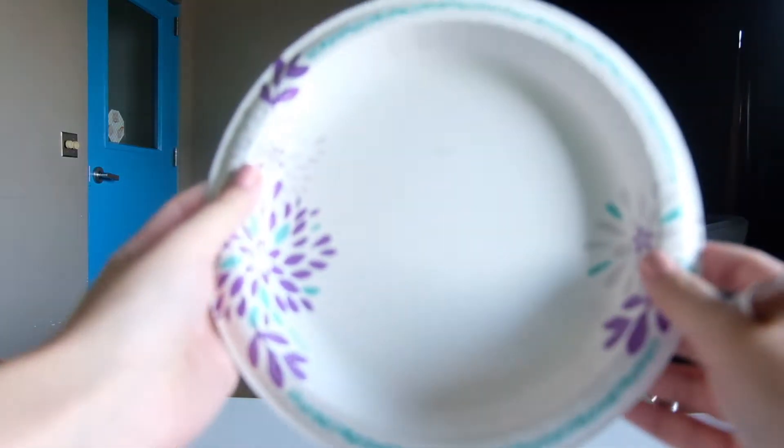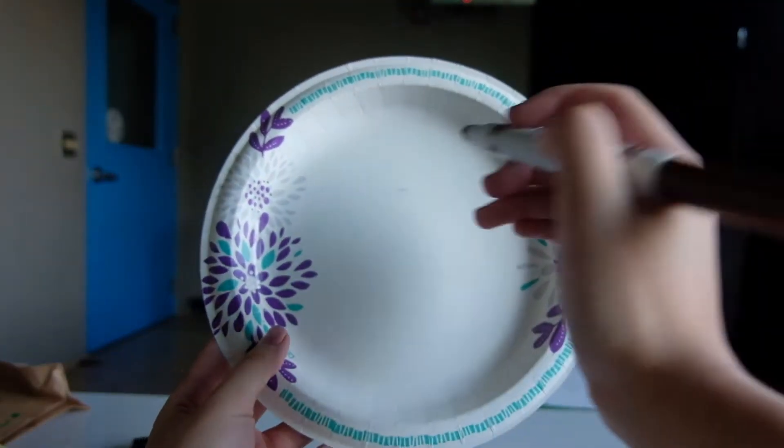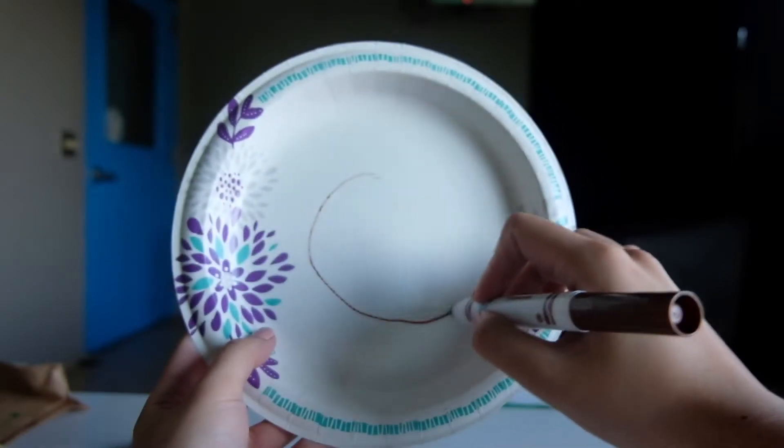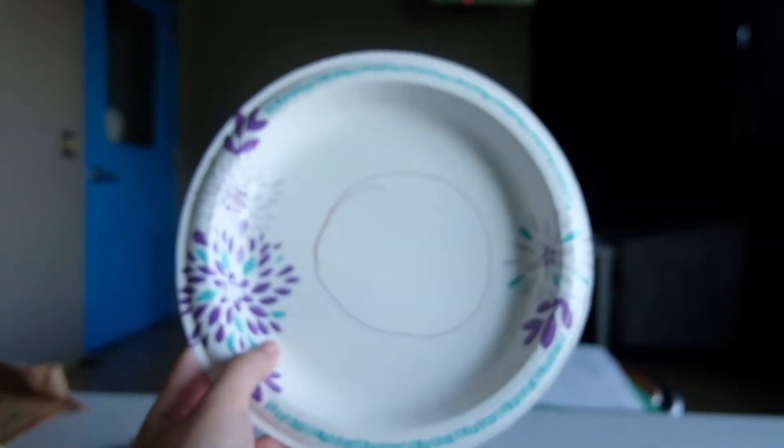We are going to begin by grabbing our paper plate and drawing a circle inside of the paper plate. We are going to be cutting this circle out later.